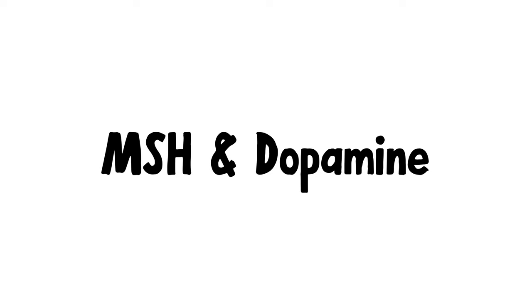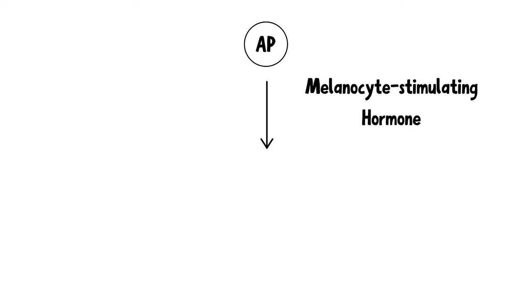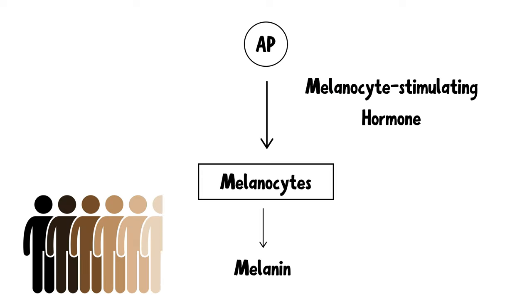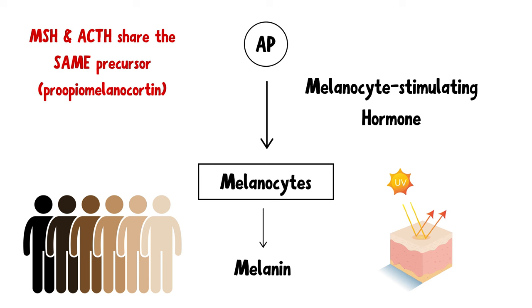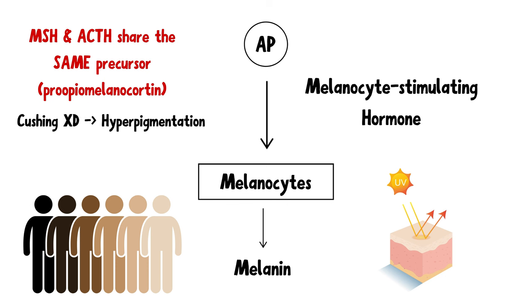Now let's move on to MSH and dopamine. MSH, also known as melanocyte-stimulating hormone, is produced and released by the anterior pituitary gland. It stimulates melanocytes to produce melanin, which gives the dark skin color and protects against UV. A very important point to remember is that MSH and ACTH share the same precursor molecule. Therefore, in Cushing's syndrome — where there's excessive production of ACTH — hyperpigmentation can also be seen as a result of high levels of MSH in the blood.